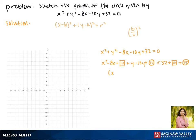Now we can rewrite our x's as x minus 4 squared, and we can rewrite our y's as y minus 5 squared, and this equals 9.